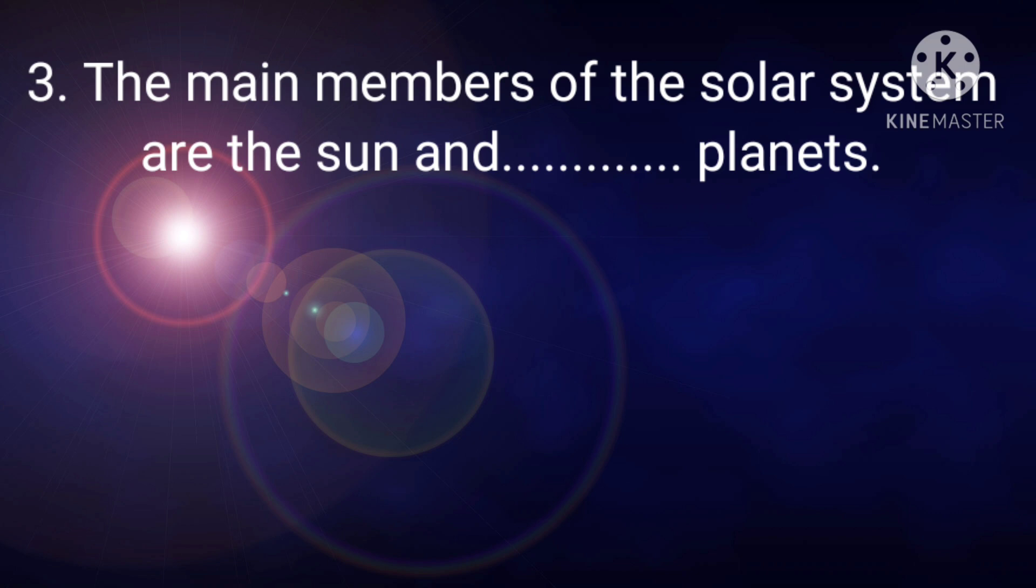Number 3, the main members of the solar system are the sun and dash planets. It is, 8 planets.